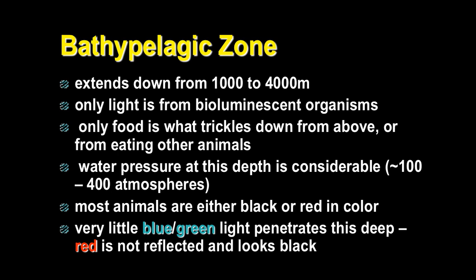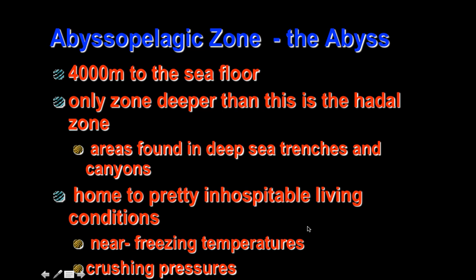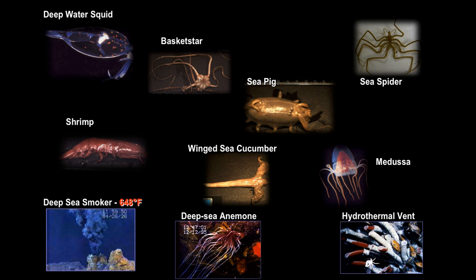The bathypelagic zone has only blue, red, and green light penetrating, and the animals here use bioluminescence — creating light from their own bodies. The anglerfish and some jellyfish produce light there. The abyss is the deep zone where animals get energy from hydrothermal vents or smokers.